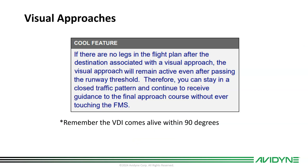This is important: if there are no legs in the flight plan after the destination associated with the visual approach, the visual approach will remain active even after passing the runway threshold. Remember, there's no published missed approach for a visual approach. Therefore, you can stay in a closed traffic pattern and continue to receive guidance to the final approach course without ever touching the FMS — you can do touch-and-goes and still have vertical and lateral guidance on the final approach.